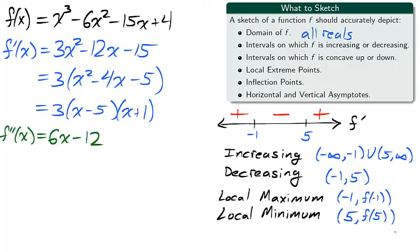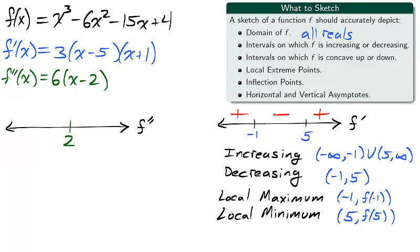We use the unsimplified form of f prime to find the second derivative, which we simplify by factoring out 6. We divide the number line into intervals using the 0 of the second derivative, x equals 2. And we use the test points 3 and 0 to determine if the second derivative is positive or negative on these intervals.